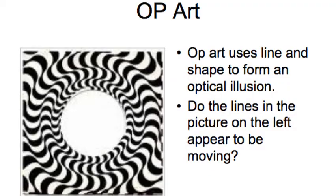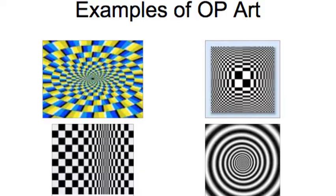Hi everyone, and today I'm here with another op art video. Just a reminder that op art uses line and shape to form an optical illusion. Today we're going to be looking at some checkerboards and some circles and how you can manipulate the shape a little bit to form an optical illusion. So let's get started.